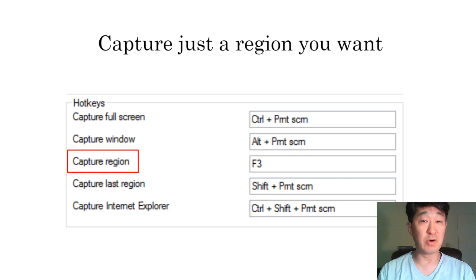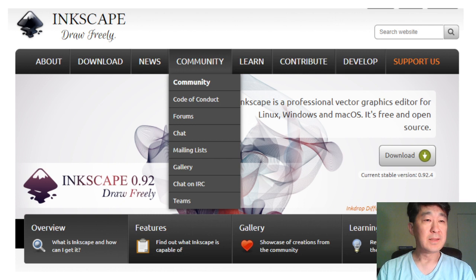And once you download it, if you go to setting, you can use this capture region. And then I set my own hotkey there. Then you can drag and select the part you want to screenshot. That's really convenient.